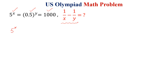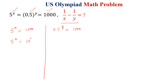We know that 5 to the power x is equal to 1000. We can write this as 5 to the power x is equal to 10 to the power 3. Then, raising both sides to the power 1 over x, we get 5 is equal to 10 to the power 3 over x.